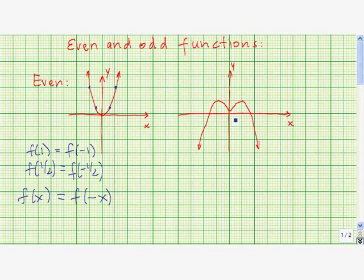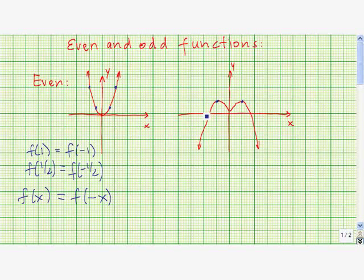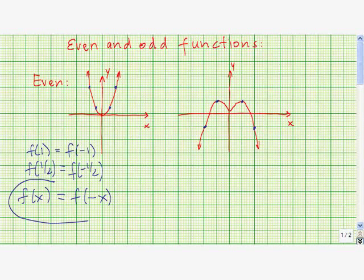You can see the same pattern here: at x = 1 the y-value is here, and when x = -1 the y-value is here. At x = -2 it's here, and at x = 2 it's here. This leads to an important algebraic property of even functions: f(x) = f(-x).